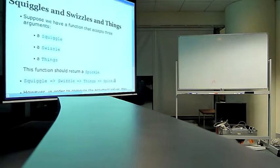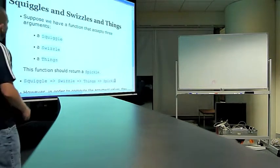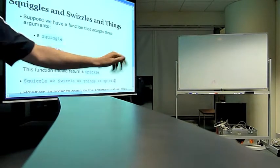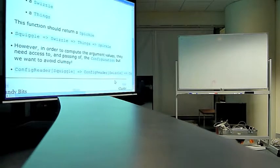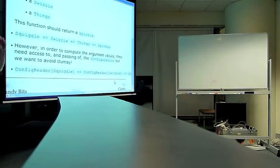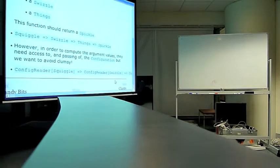Suppose we have a function that accepts three arguments — swiggle, swizzle, and things — and needs to return a spickle. In Scala syntax it takes a swiggle, swizzle, things, and returns a spickle. The arrow is right-associative, which some people call curried form: once we pass in a swiggle, we get back a function that takes swizzle and things and returns a spickle. It could just be thought of as a three-argument function returning a value.